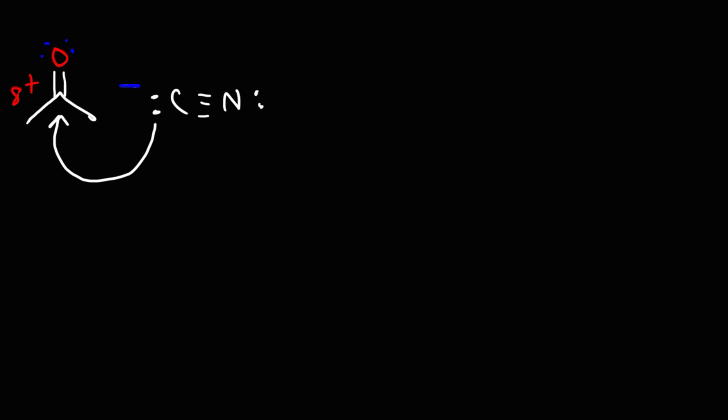As the nucleophile attacks the carbonyl carbon, the pi electrons in this double bond are going to break and they're going to be pulled back to oxygen because oxygen is more electronegative than carbon. And so what we're going to get right now is an alkoxide ion with a nitrile group attached to it.